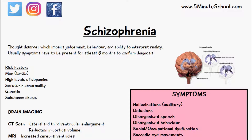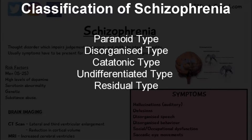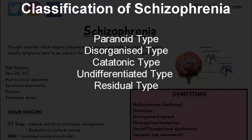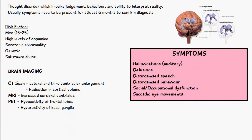These symptoms vary according to the type of schizophrenia that you have. The classification of schizophrenia can include the paranoid type, disorganized type, catatonic type, and there's also undifferentiated type and residual type. The symptoms involved in schizophrenia include hallucinations, which are often auditory — so the patient is usually hearing voices. Others include delusions, disorganized speech, disorganized behavior, and social or occupational dysfunction.